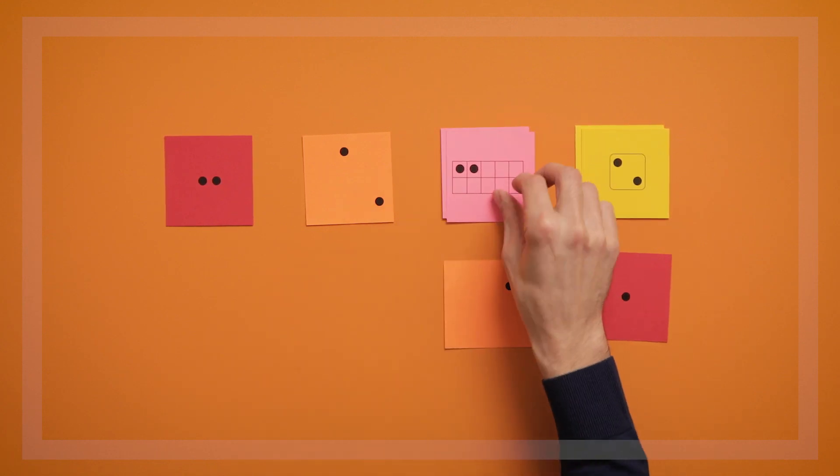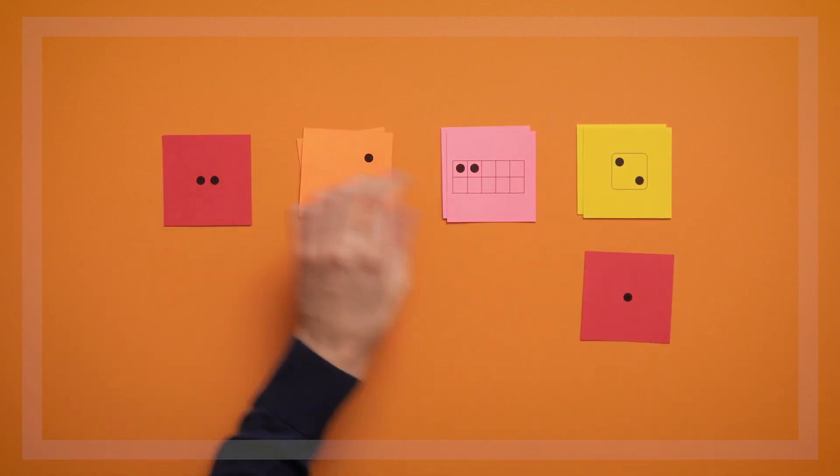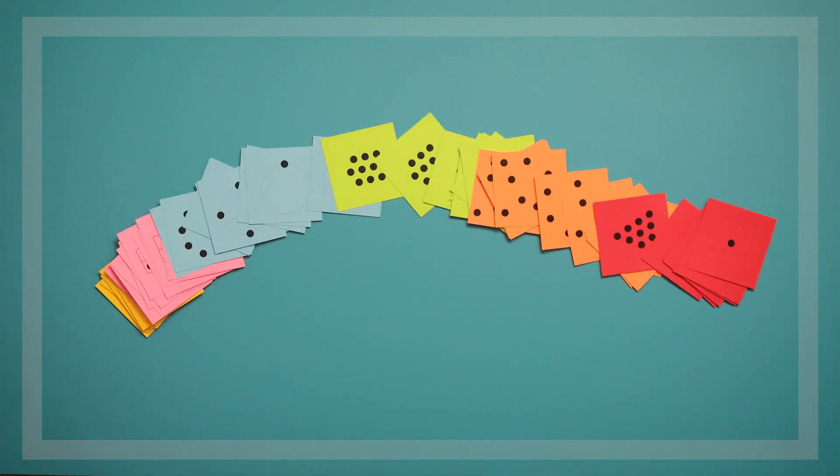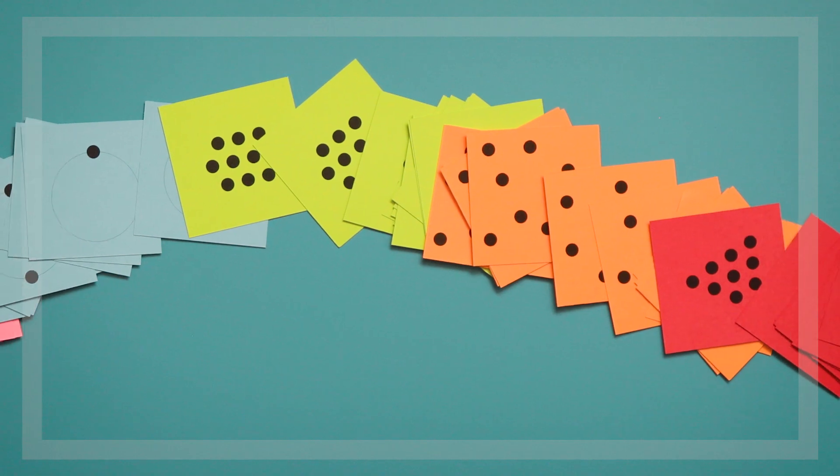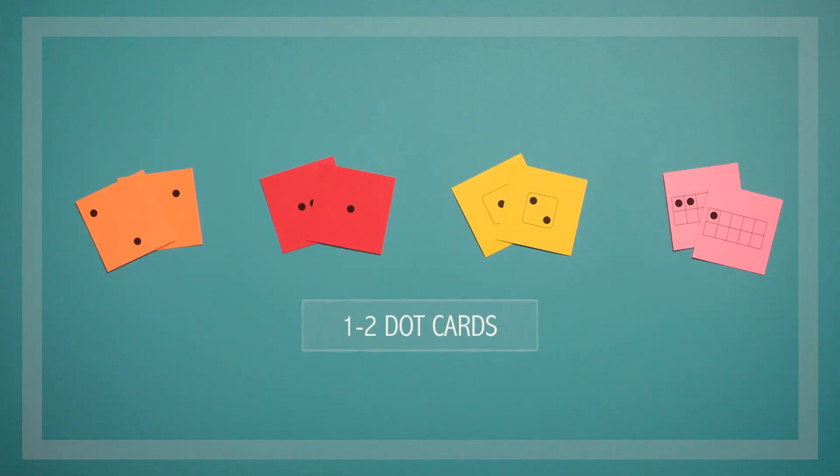As they sort by color, they're also becoming familiar with the number of dots on each card. So first you'll need a deck of dot cards. Each deck has cards in seven different colors, and each color has a different way of arranging the dots. For this game, we'll start out using just the one and two dot cards, and any colors are okay.